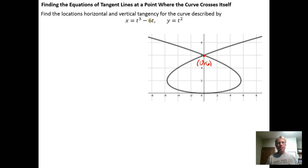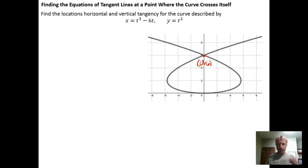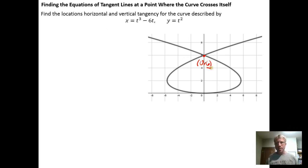What you need to do — because you're going to find the derivative dy/dx, which is a function of t — is know the value of t that goes with this point. If we have a nice lattice point, as in this case, it's fairly straightforward. You can see that y has to be equal to 6. So if y is 6, that means t squared has to equal 6, and you can solve for t: t equals plus or minus the square root of 6.